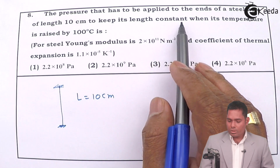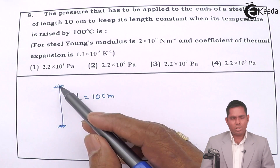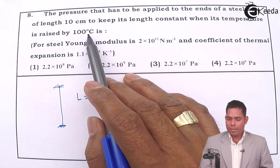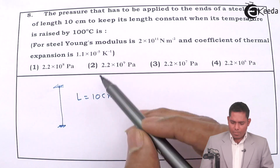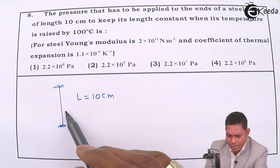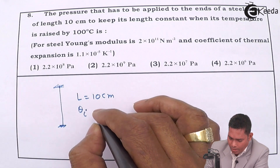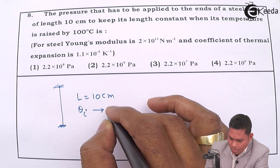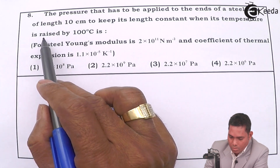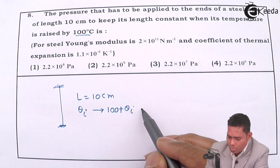The goal is to keep its length constant, because when you apply pressure there is a change in length. We need to keep the length constant when its temperature is raised by 100 degrees centigrade. So the initial temperature is θᵢ and the final temperature becomes 100 + θᵢ.